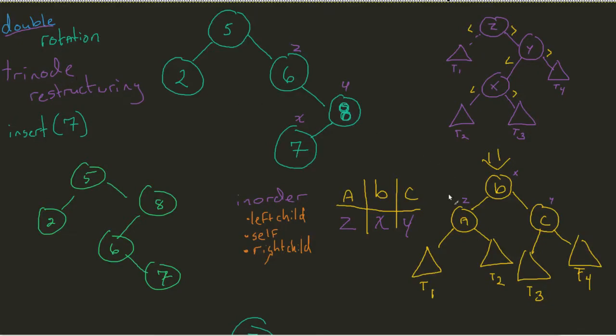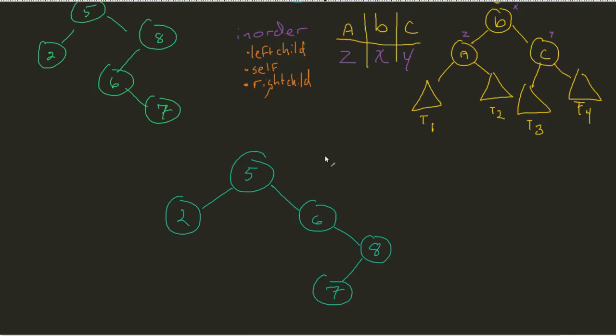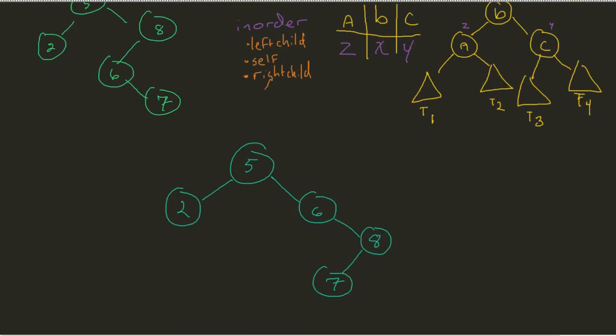Now that we've discussed the idea of doing a trinode restructuring with that abstract concept of making our x, y, and z turn into a, b, and c, let's actually apply it to our double rotation of this insert 7 that we've done here. So in that case, as we just mentioned, I do some kind of mapping.